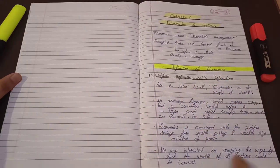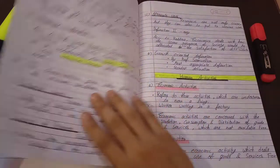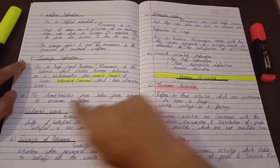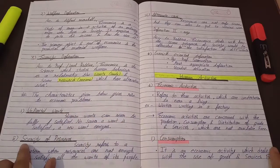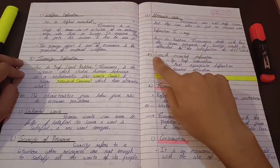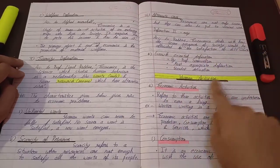Welfare definition, wealth definition, scarcity definition, unlimited wants, scarcity of resources, alternate uses, and growth oriented definition. Then human activities.